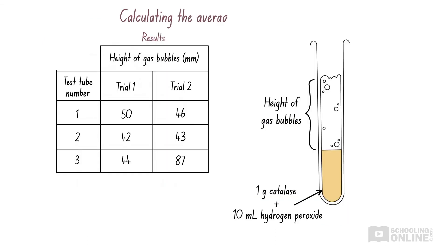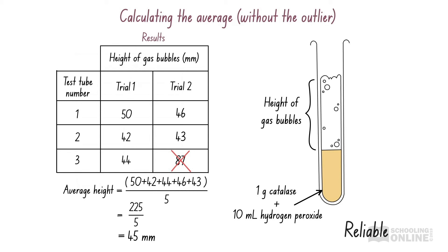Let's see how this applies to the experiment where we measured the height of gas bubbles formed through the decomposition of hydrogen peroxide by catalase. Firstly, we need to remove any outliers. Then, we find the sum of all the measurements, and divide by the total number of measurements, which is 5. This gives us 45 millimetres, which is a reasonable answer. The values that were too large cancelled out the effect of the values that were too small, giving us a reliable final answer.